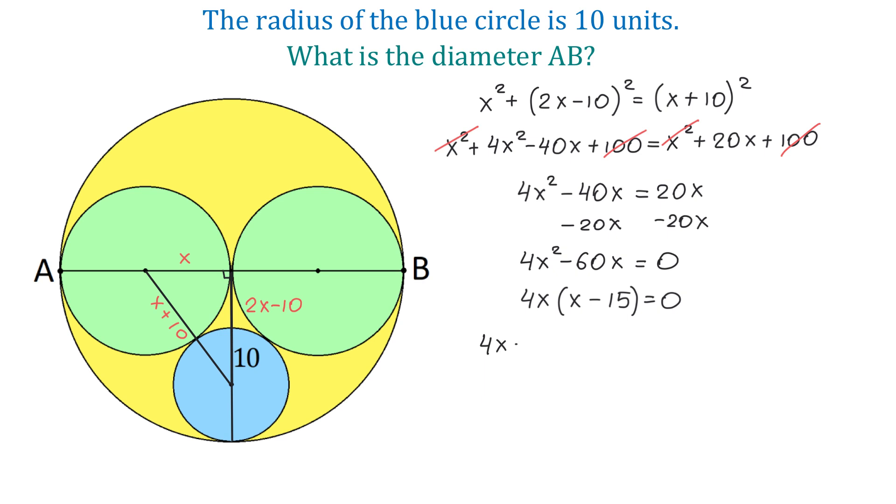Then, in this product, 4X can be 0 or X minus 15 can be 0. We will ignore the first equation because X cannot be 0. And in the second one, X equals 15.